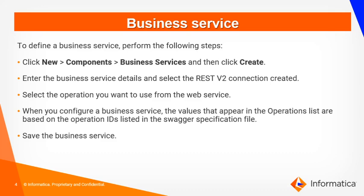To define a business service, you might need to log in to your IACS org, go to Data Integration Console and click New, Components, Business Service, and then click Create. Enter the business service details and select the REST V2 connection that you had created. Now select the operation you want to use from the web service. When you configure a business service, the values that appear in the operation list are based on the operation ID that you would have specified in the Swagger file.